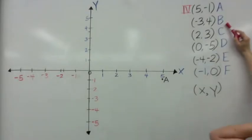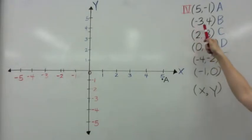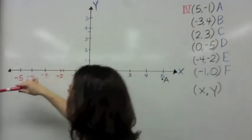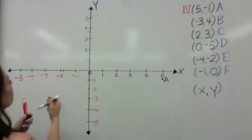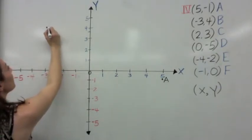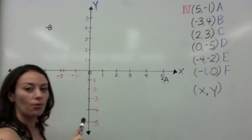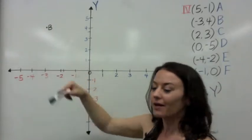Let's do point B. We're going to start at negative 3 on the horizontal x-axis, and then go up 4 because y is positive 4. You start at negative 3 and go up 4, and we label this B. What quadrant is this in? It's quadrant 2.